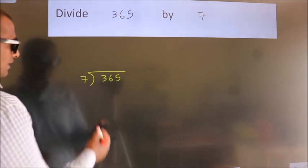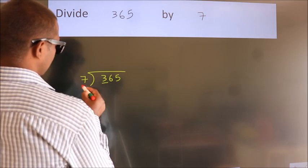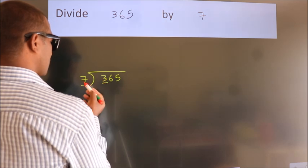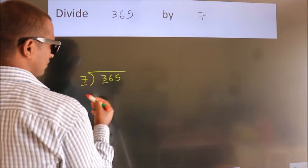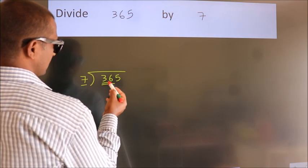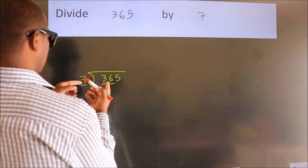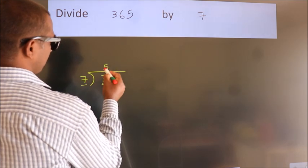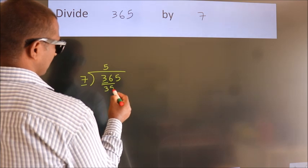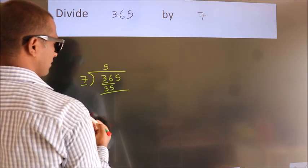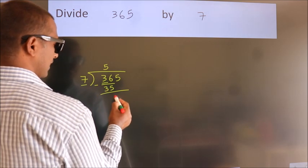Here we have 3. Here 7. 3 is smaller than 7, so we should take 2 numbers: 36. A number close to 36 in the 7 table is 7 times 5 equals 35. Now we should subtract. We get 1.